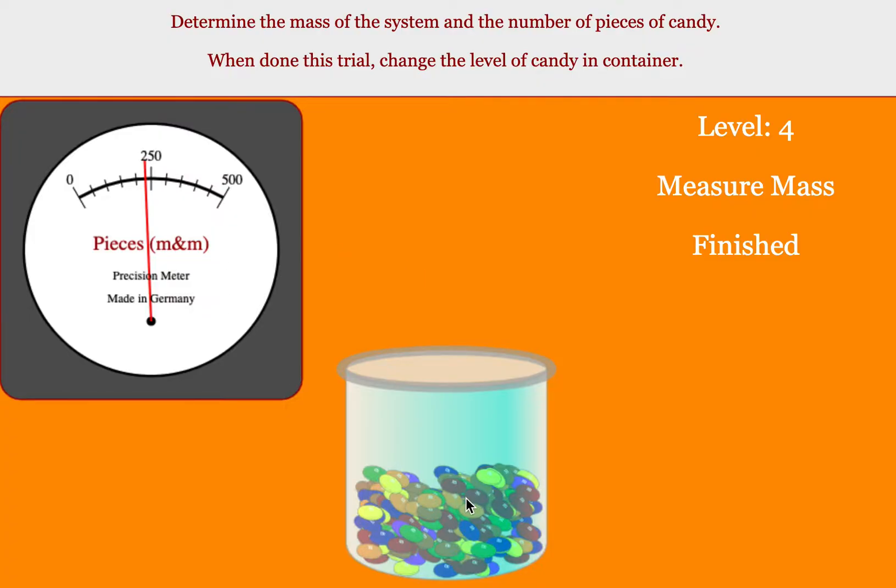So when you start out, your container will be filled to a certain level. We're going to call that level four. To get the number of pieces, make an estimate based on this candy meter, and each of these lines is worth 50, so this is 200, that's 250.